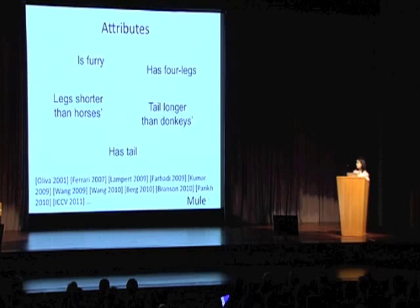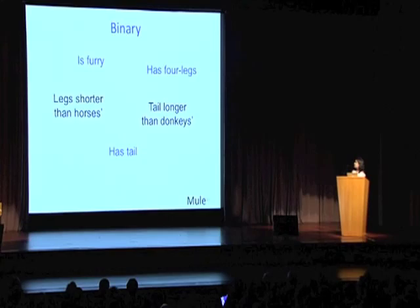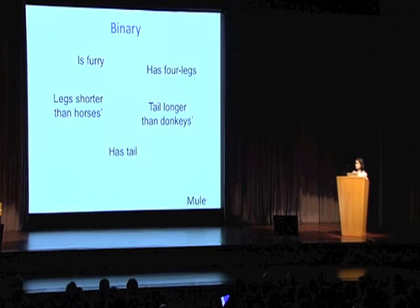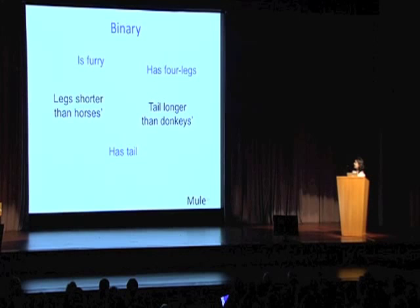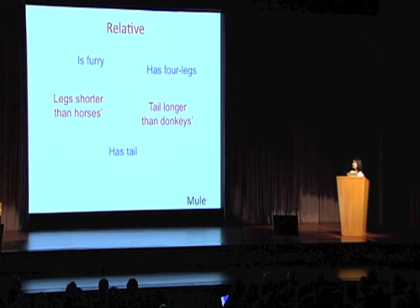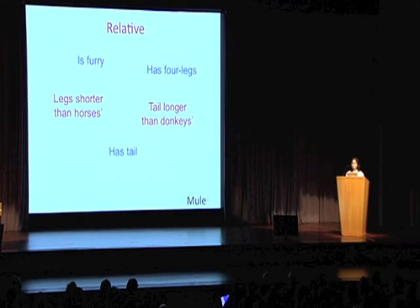There are many works, especially in the past few years, that have looked at attributes for various problems. But most of these works think of attributes as categorical and, in fact, binary. For some attributes, like having four legs, this is perfectly fine — they are inherently binary. But for some other things, like the tail being longer than a donkey's tail, binary attributes just don't work. It's inherently a relative concept, and these relative descriptions are very natural for how humans communicate.